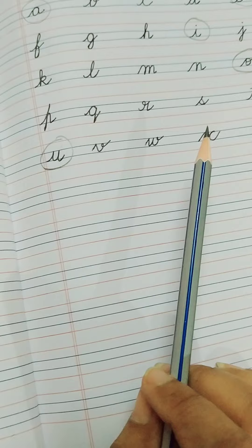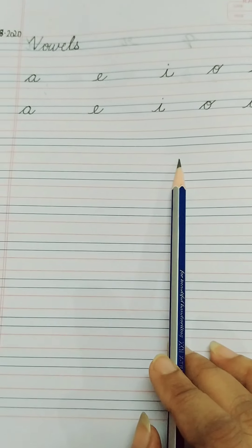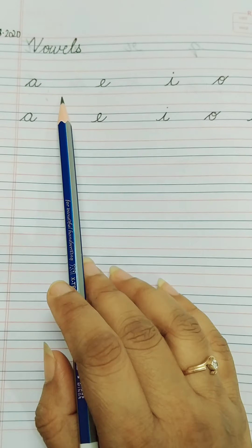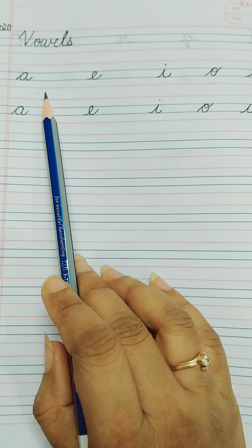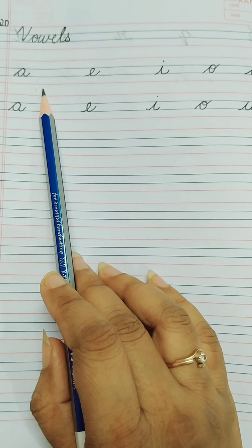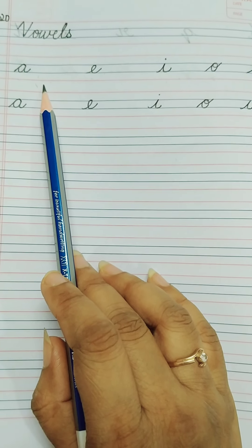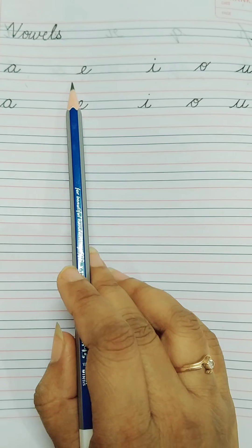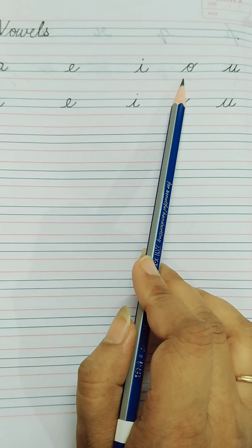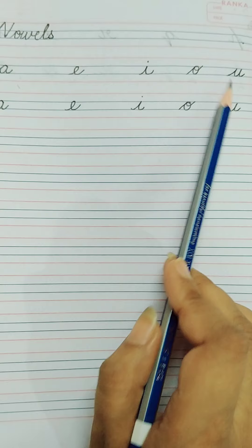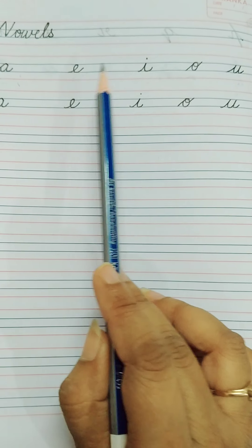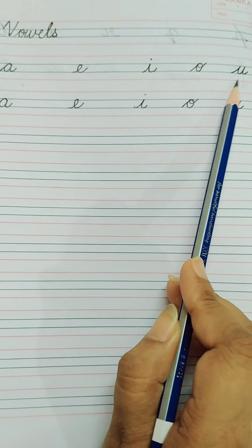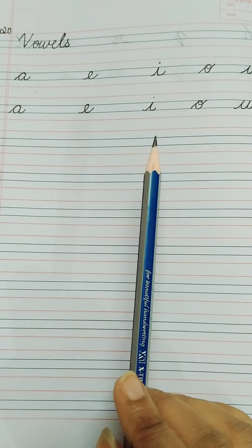All right? So dear children, you have to write the five vowels. You have to say A, E, I, O, U. A, E, I, O, U are vowels.